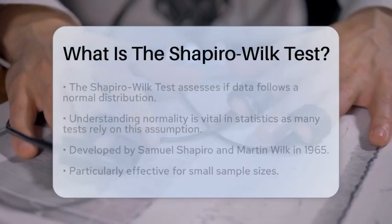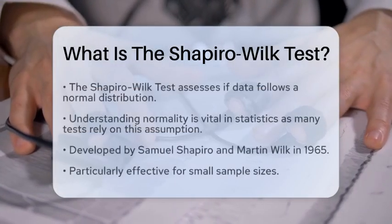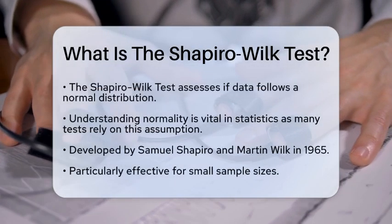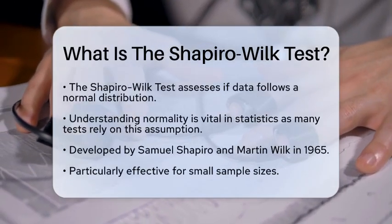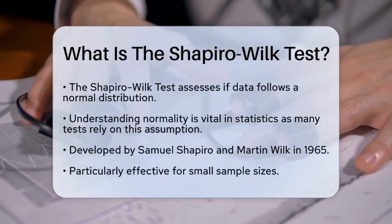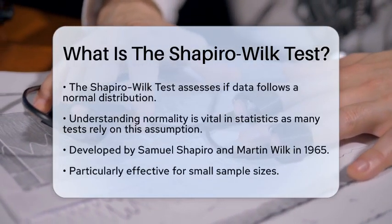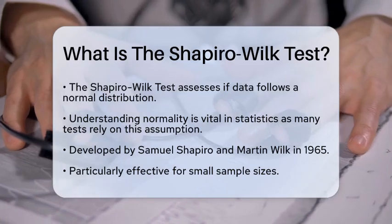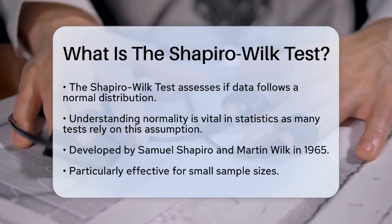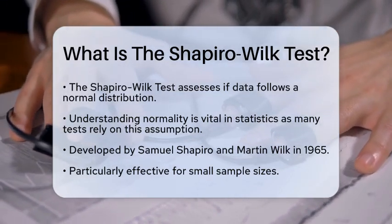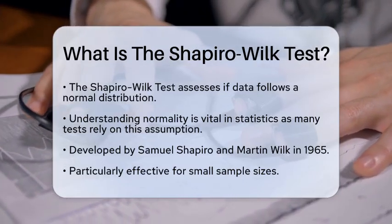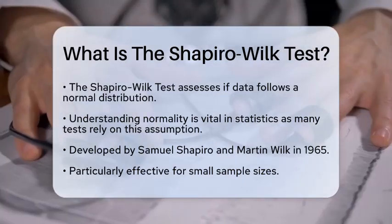What is the Shapiro-Wilk test? Have you ever wondered how researchers determine if a set of data follows a normal distribution? Understanding this concept is essential in statistics, as many statistical tests assume normality. One of the most widely used methods for testing this assumption is the Shapiro-Wilk test.